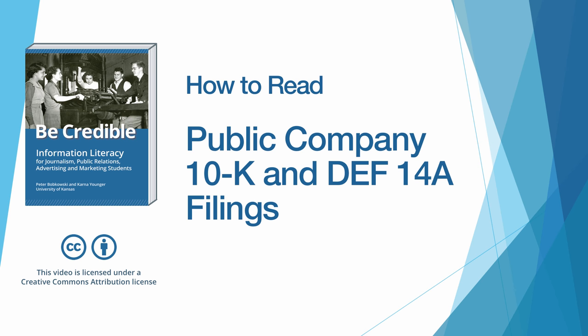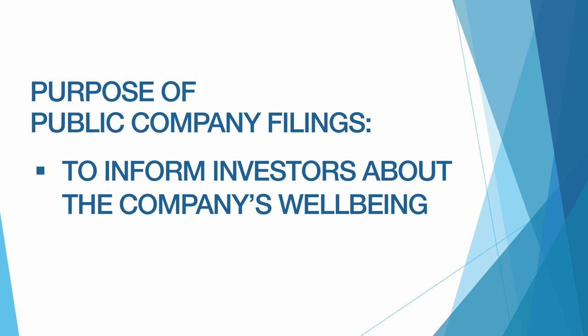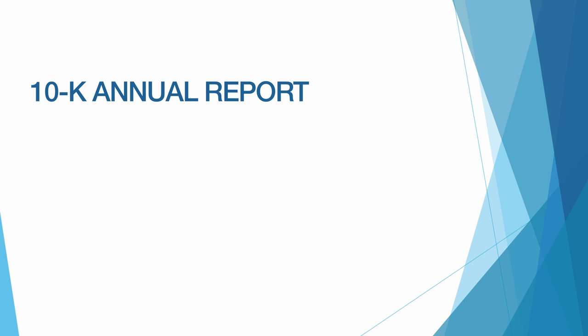This is a companion video to the Be Credible textbook on reading the most important sections of Forms 10-K and DEF 14-A. If you haven't watched the video on finding and accessing these forms, you may want to do that before watching this video. All of the forms that companies file with the SEC are meant to inform investors and potential investors about the company's business and financial well-being. The 10-K is the Annual Report, and public companies are required to file it once a year to summarize their business standing and practices.